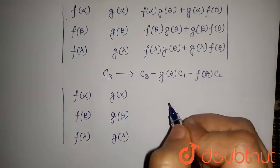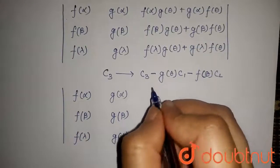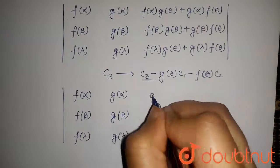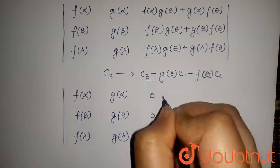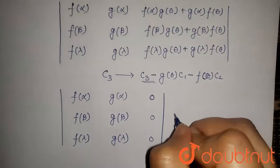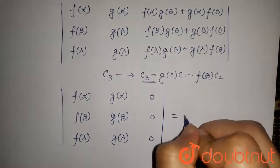And the third column will be now, after applying this, we get the third column is 0, 0, 0. So the value of this determinant will be equal to 0.